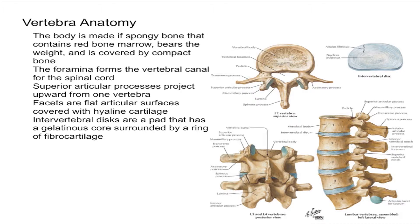Next, we have the superior articular process, which projects upward. It's labeled right here. It projects upward from one vertebra and meets a similar pair of inferior articular processes projecting downward from the vertebra just above — you can see where they meet right over here.